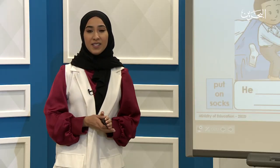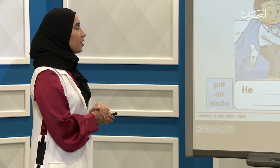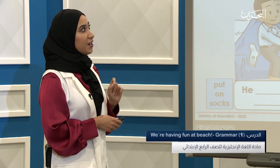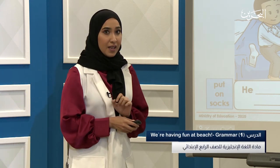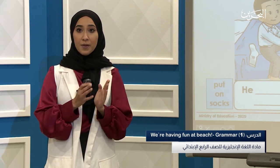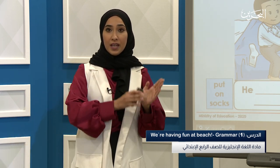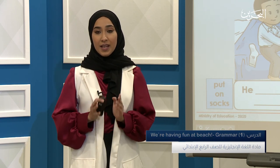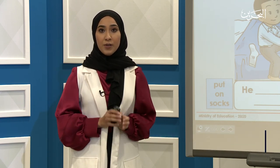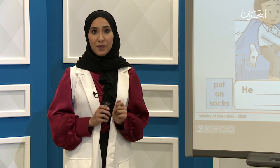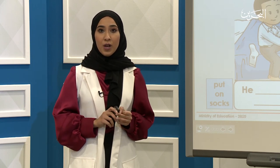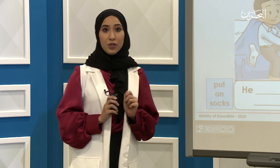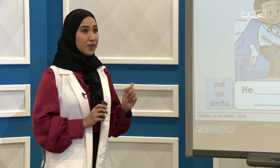Now let's practice more. Here you are going to answer the questions. Use the verbs in the boxes. Before we start, remember: with he, she, it — we use the verb to be 'is'. With I — we use the verb to be 'am'. With they, we, you — we use the verb to be 'are'. You have two minutes to answer the questions.